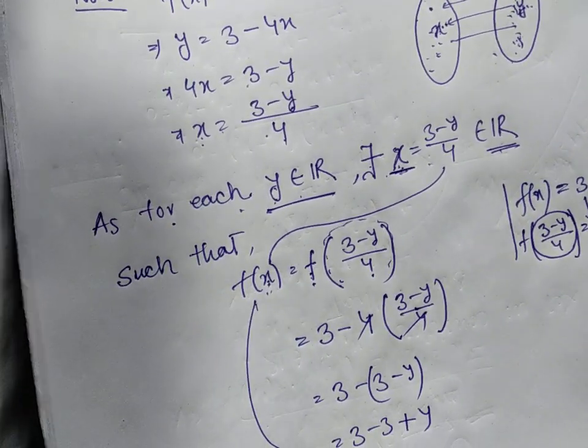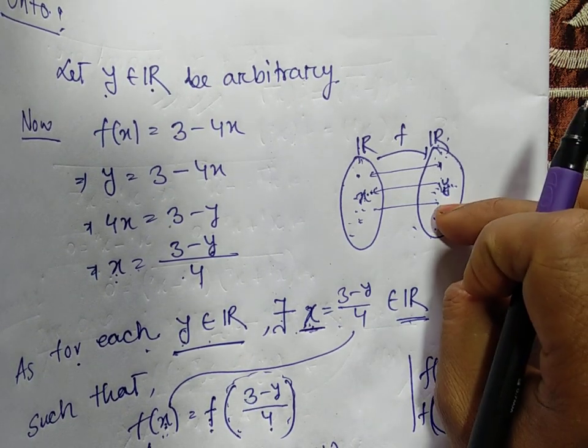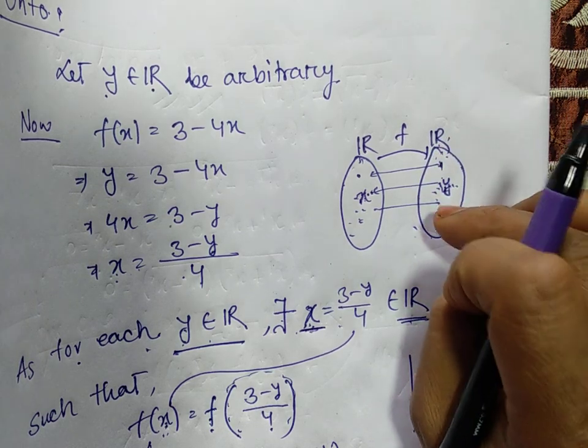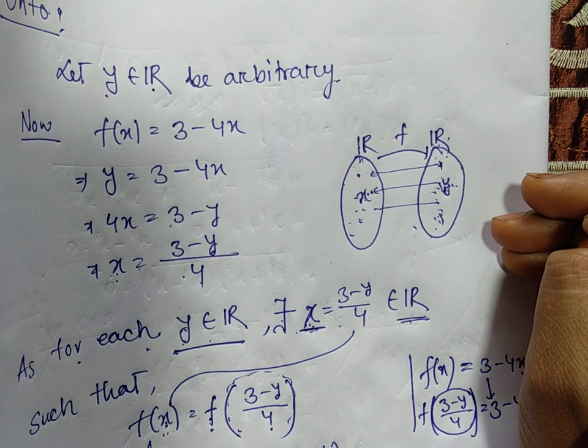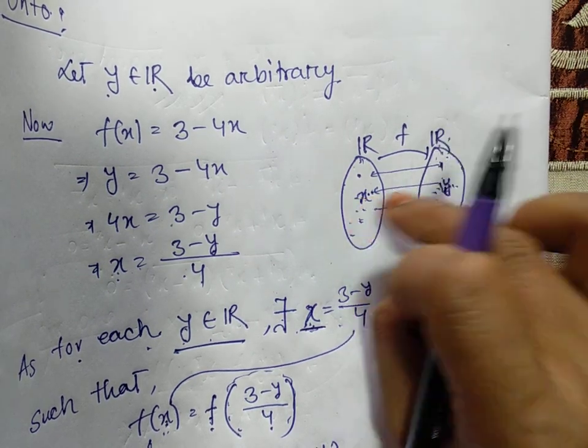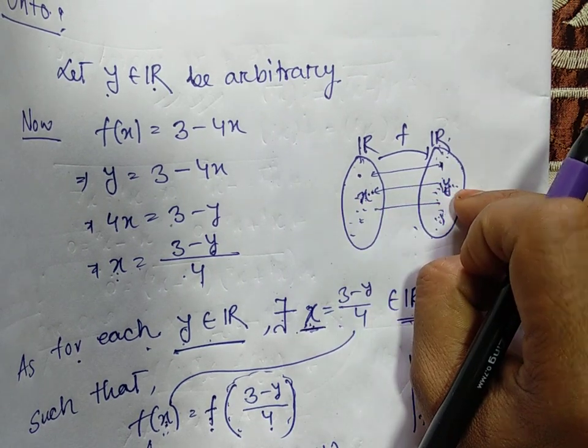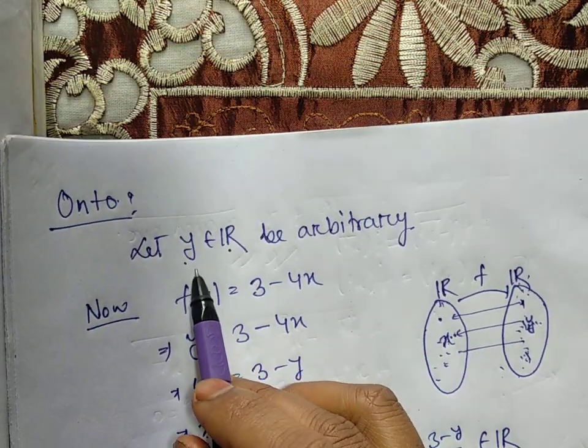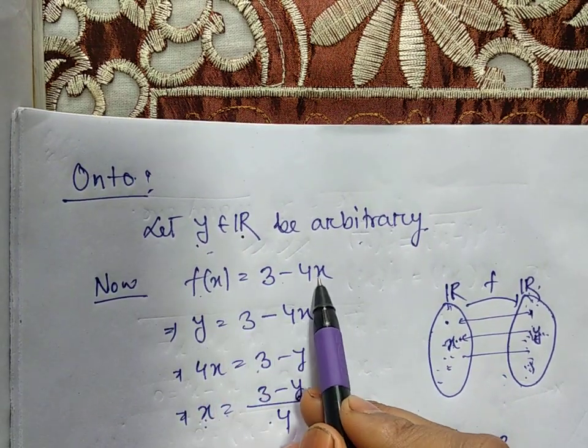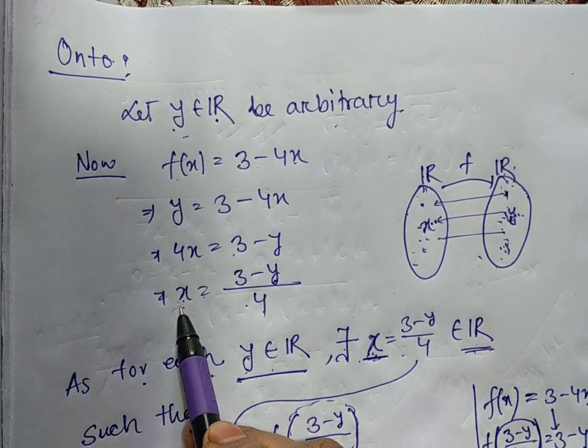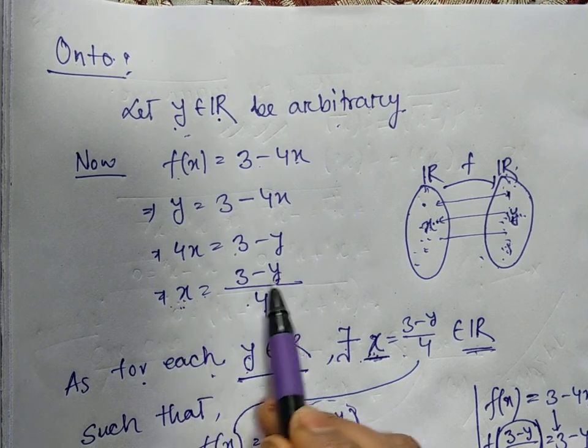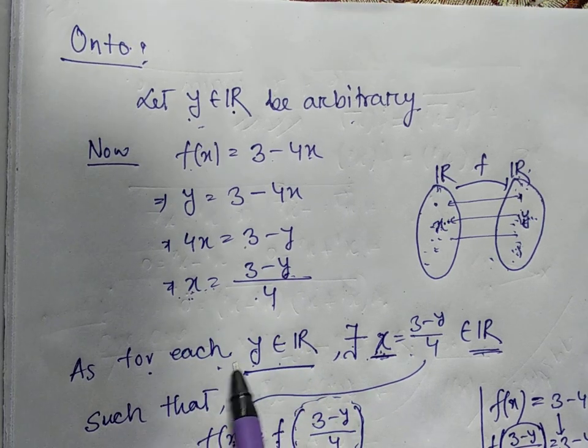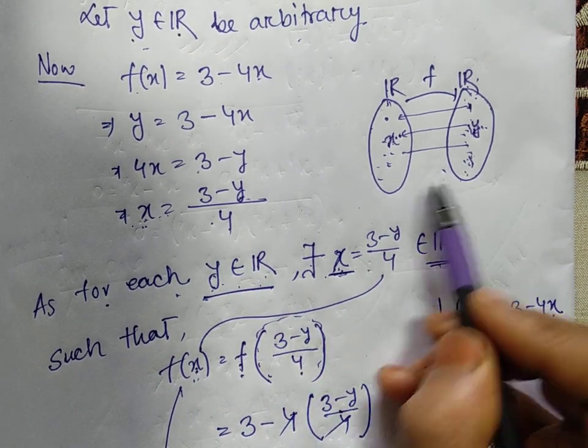Next onto: onto means which set plays the important role? The second set plays the important role. To be onto, all elements of the second set should be related. How many elements are there? Infinite. Each protected element must be related. We cannot check each and every one, so we took an arbitrary element. If that arbitrary element is the image of some x, then each protected element will be the image of some x. This is actually a specific method: we took y as an arbitrary element.